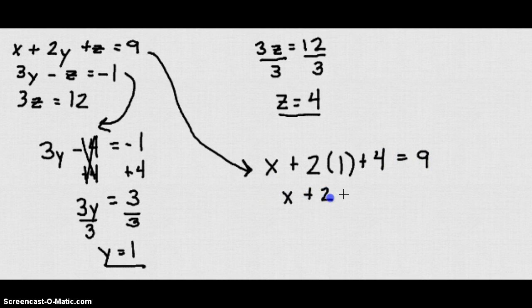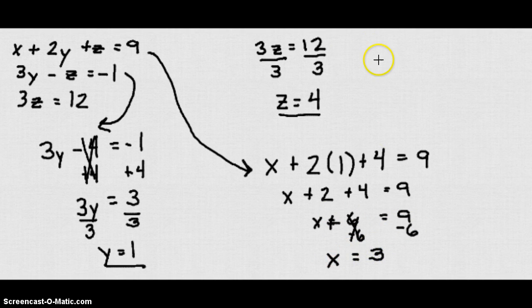So x plus 2 plus 4 equals 9, or x plus 6 equals 9. We'll take 6 from both sides, and we'll get x is equal to 3. So we have our solution that x is 3, y is 1, and z is 4.